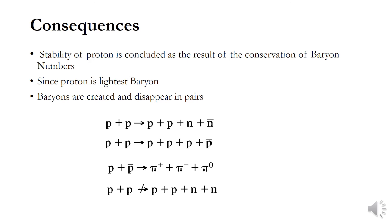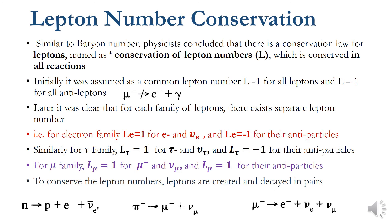One important point regarding baryon number notation: baryon number is represented by capital A because nucleons — protons and neutrons — are baryons. For a nucleus, the baryon number equals the mass number A, which is the total number of protons plus neutrons. That is why the baryon number is represented by capital A, equivalent to the mass number.